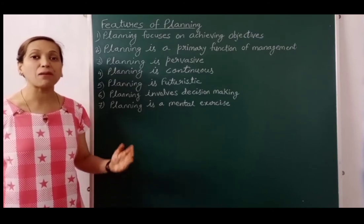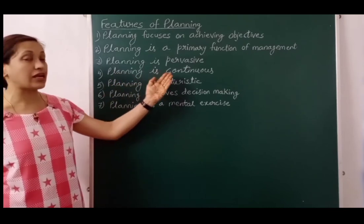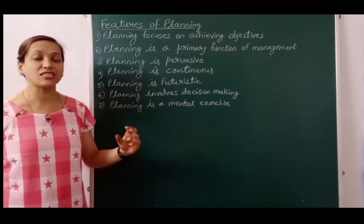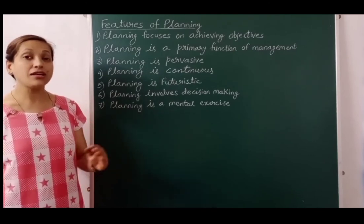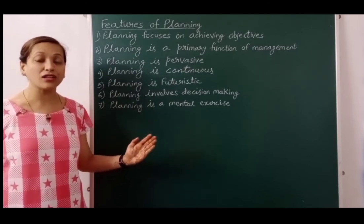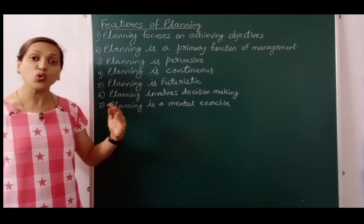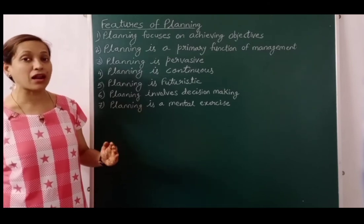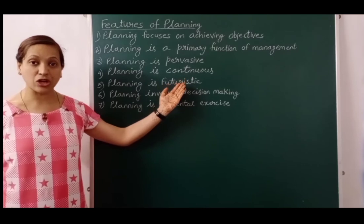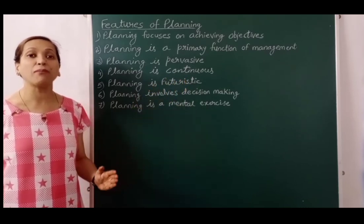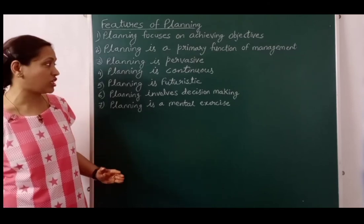The fourth feature is: planning is continuous. Plans are made for a specific period like 1 month, 6 months, or 12 months. Once this period is over, modifications need to be made to the current plan or a new plan must be made for a new objective. So we can say planning is continuous in nature. Since the business environment is very dynamic, we always need new plans.